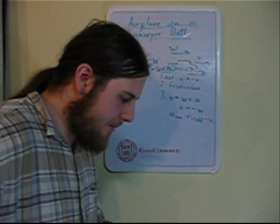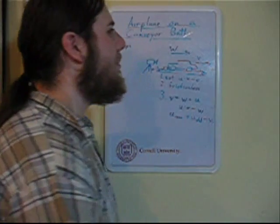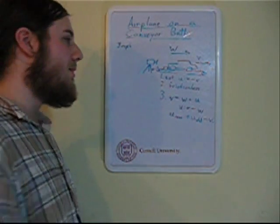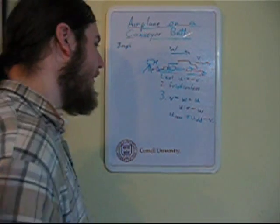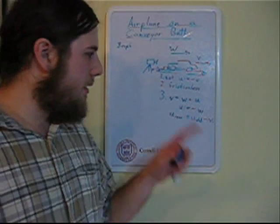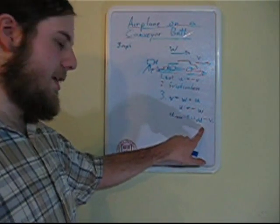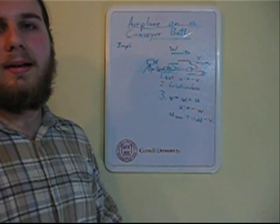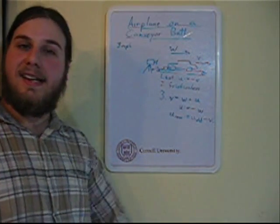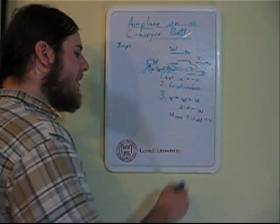I start walking forward at 3 miles per hour. My lover also moves forward at 3 miles per hour on the ground. Then u-old is 0, and the camera goes and checks my velocity and says you're moving 3 miles an hour.